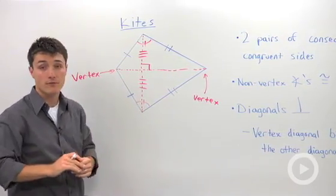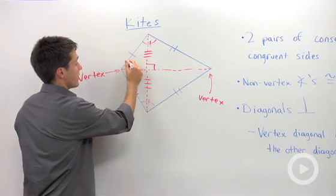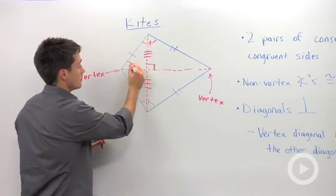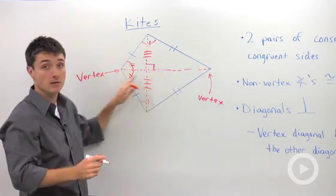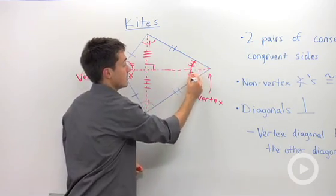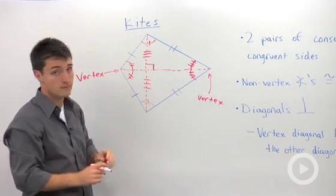And one other thing that I forgot to mention is that this vertex angle is bisected by this diagonal. This vertex angle is also bisected but not necessarily congruent to this angle.